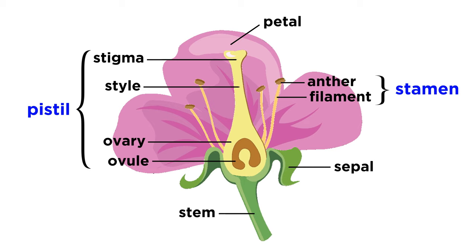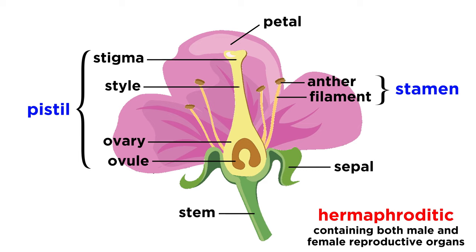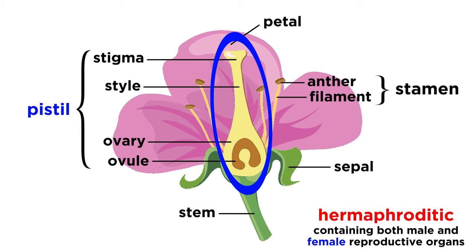A flower contains a plant's reproductive organs. Most plants are hermaphroditic, meaning they contain both male and female reproductive organs. The male reproductive organs, called the stamens, include the anthers, where pollen is stored — which is like the sperm of a plant — as well as thin filaments that connect the anthers to the flower. While there are often multiple stamens in a flower, there is usually only one pistil, which is the female reproductive organ. The top of the pistil is called the stigma, and this sticky platform is where pollen attaches at the beginning of plant reproduction.